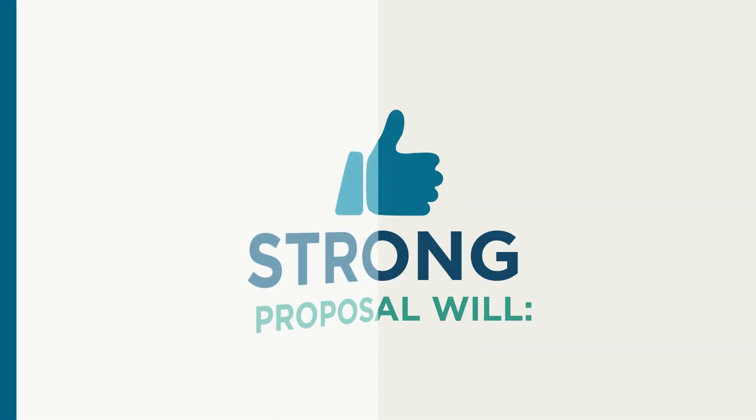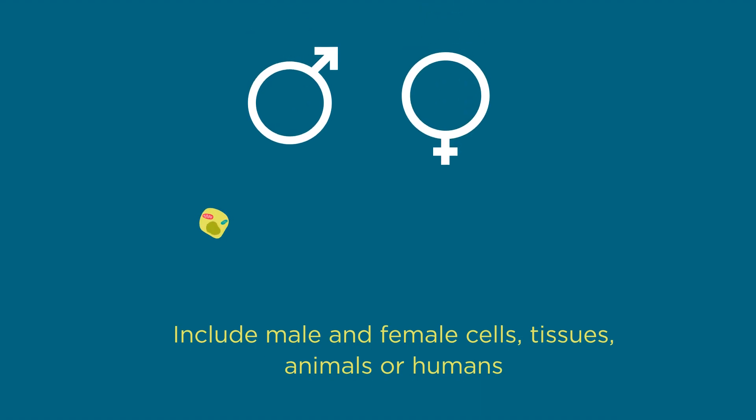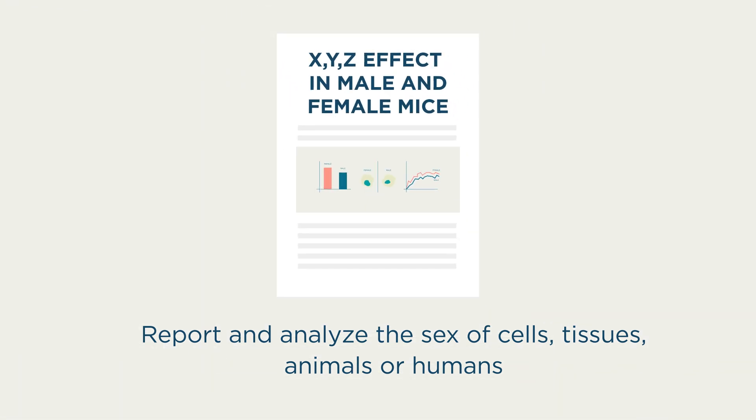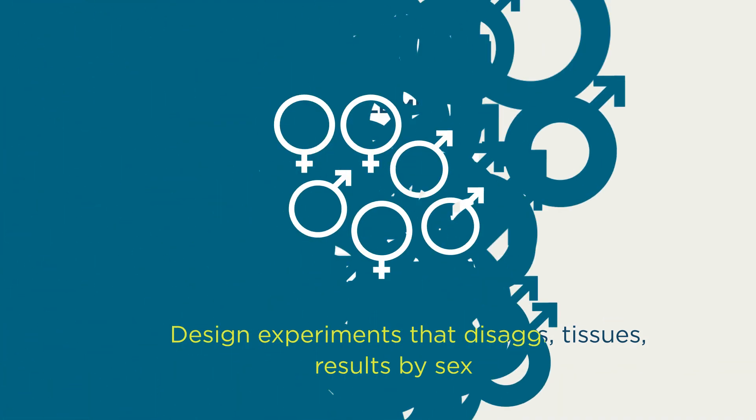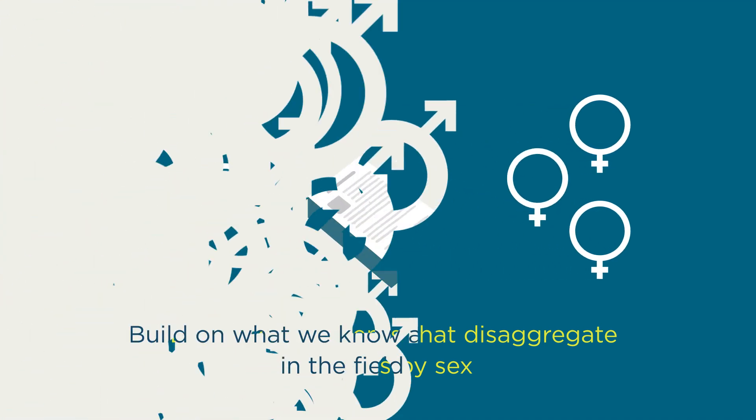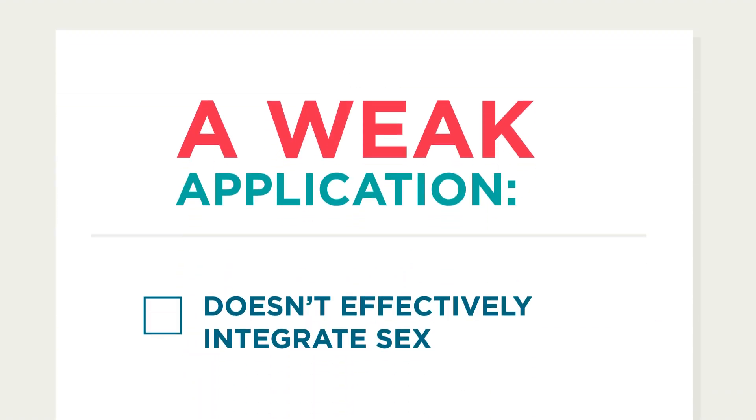When sex is applicable, a strong proposal that effectively integrates sex as a biological variable will include male and female cells, tissues, animals, or humans, report and analyze the sex of cells, tissues, animals, or humans, design experiments that disaggregate results by sex, and build on what we know about sex differences in the field of study.